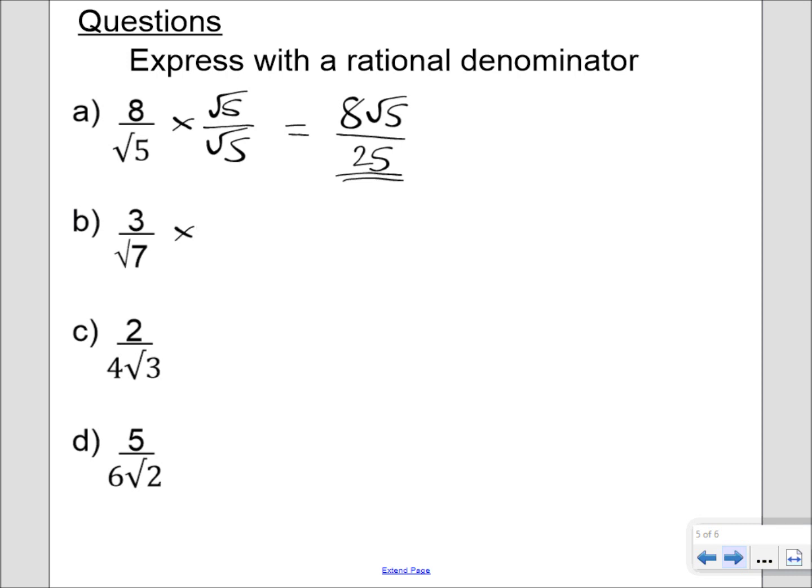For this one, multiply by root 7 over root 7, we end up with an answer of 3 root 7 over 7, because root 7 times root 7 gives me a new rational denominator of 7.